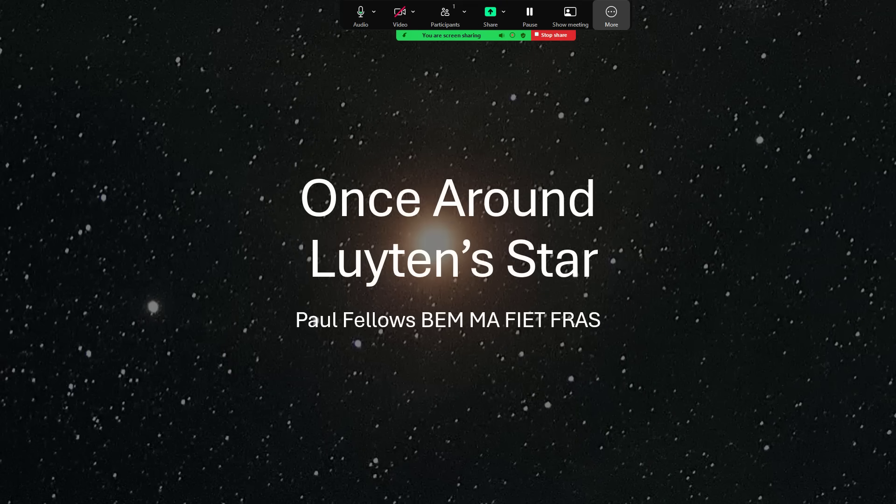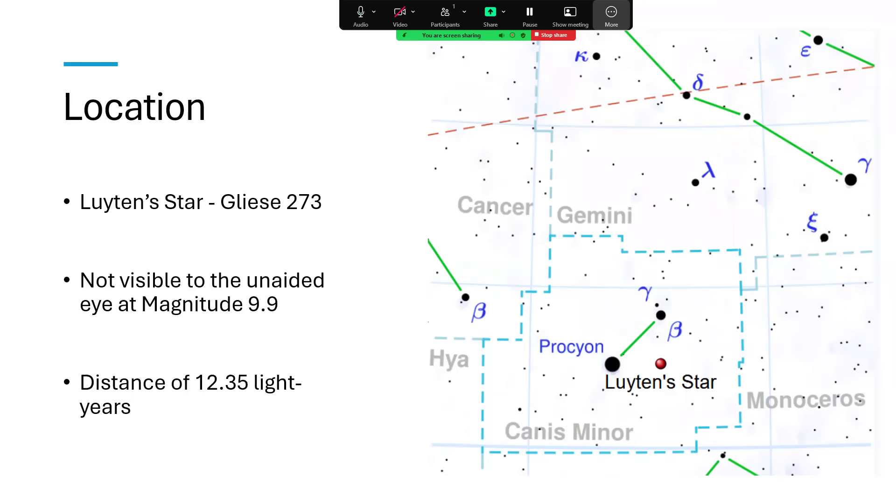Once around Luyten's star. So this little star, also known as Gliese 273, is a small, faint star that you can't see unless you have a decent pair of binoculars or more likely a reasonable telescope because it's rather faint, magnitude 9.9.